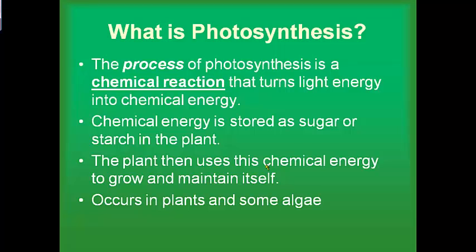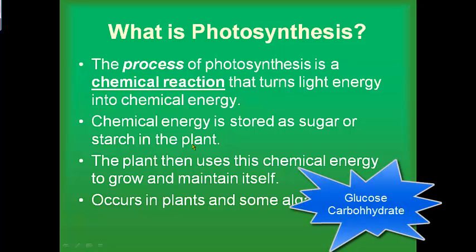So what is photosynthesis? Photosynthesis is the process of creating energy from light that a plant does. It's a chemical reaction — a plant will take light, carbon dioxide, and water, mix those together, and through a chemical reaction create its own energy. The plant then stores that energy as sugars or starches, also called glucose or carbohydrates.